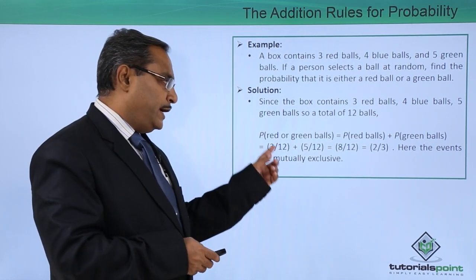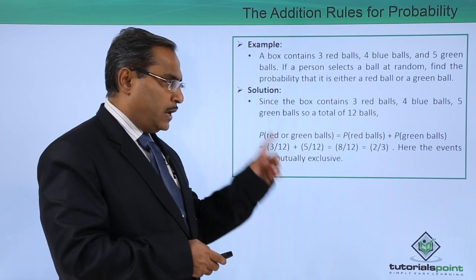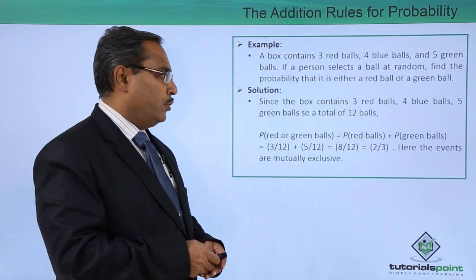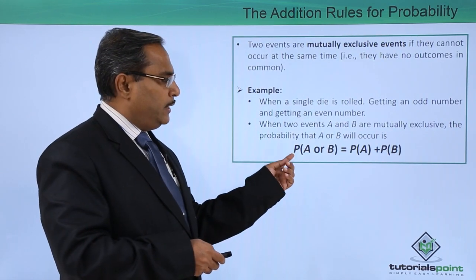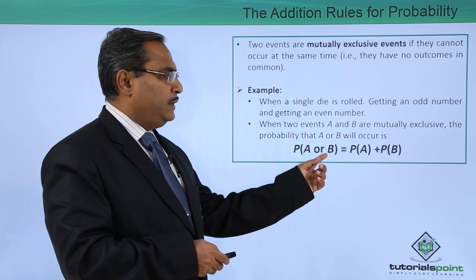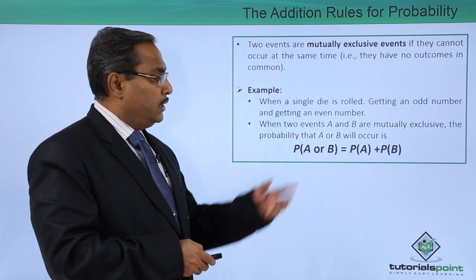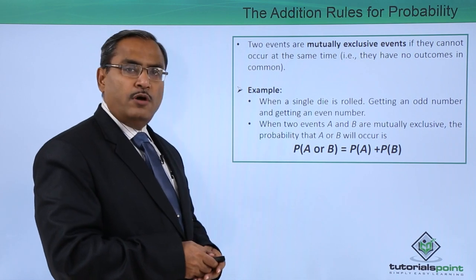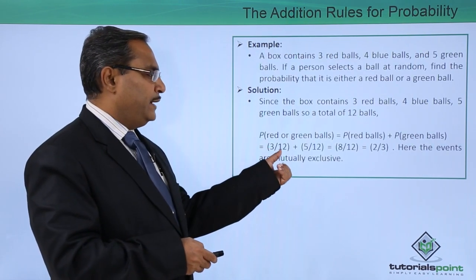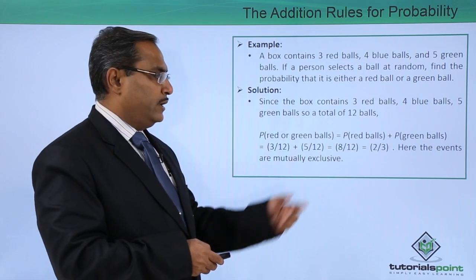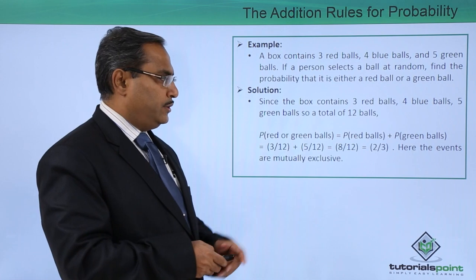The probability of red or green balls will be the probability of red balls plus probability of green balls. As discussed, probability of event A or event B is equal to probability of A plus probability of B — this is known as the addition rule for probability. Here, three by twelve plus five by twelve is equal to eight by twelve, which equals two by three.